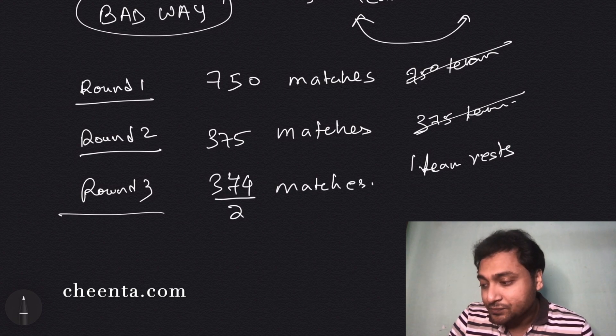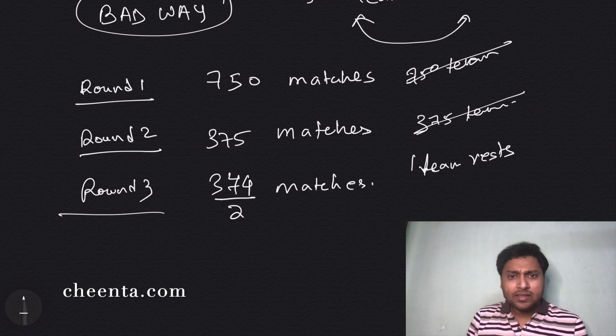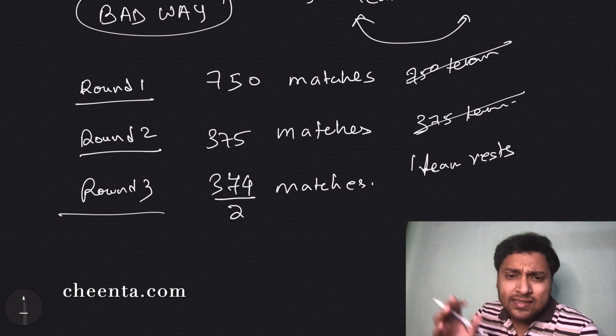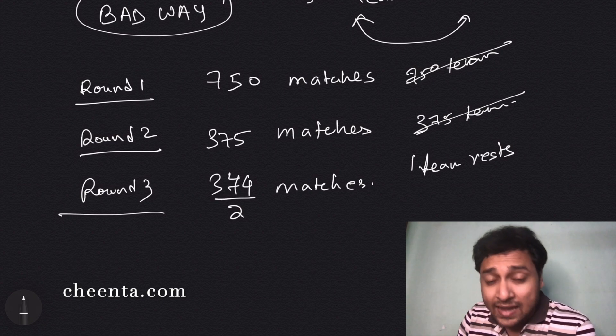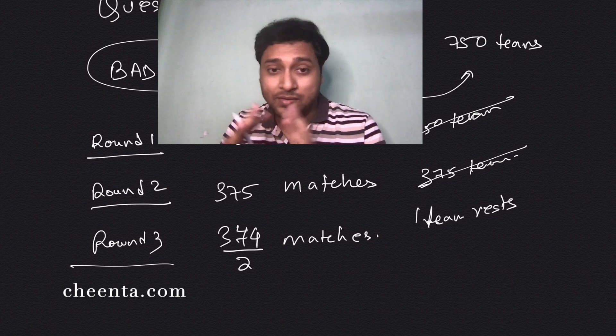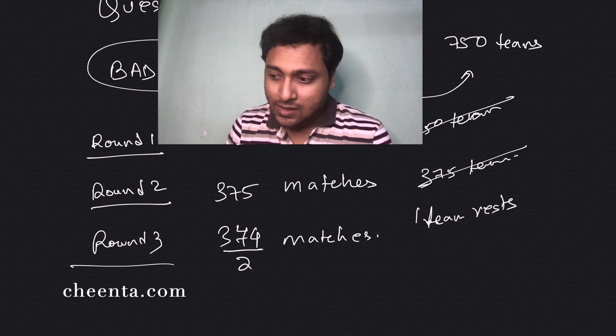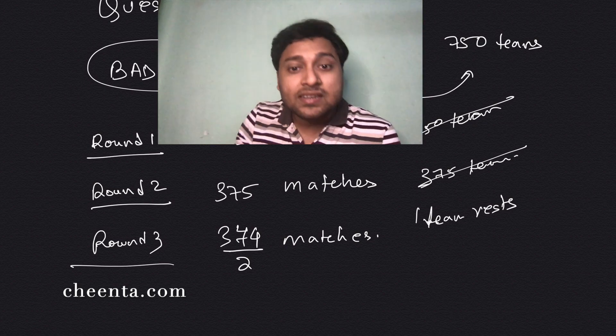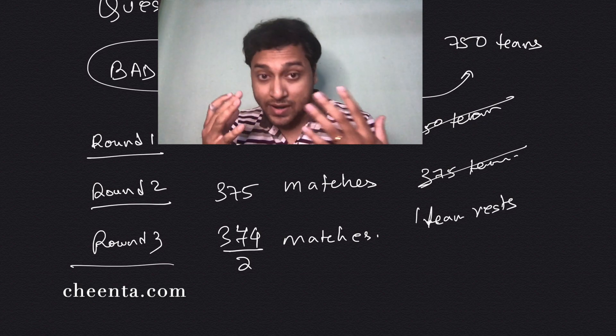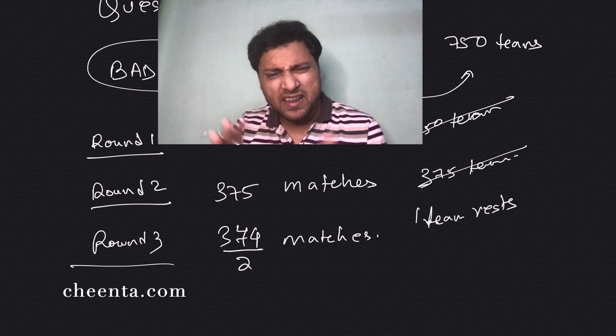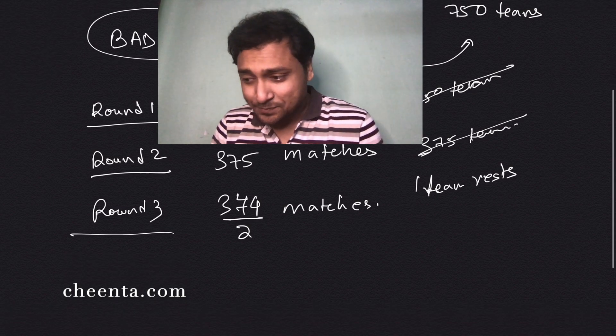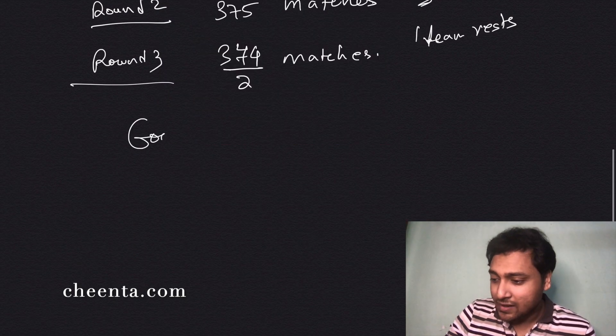In round three you have 374 divided by two number of matches. This keeps going—in round four the resting team will come back, and you can divide and continue. You count the number of teams in every round, add them up, and get the final answer. It's a very ugly way of doing this problem.